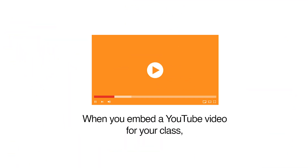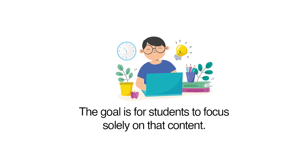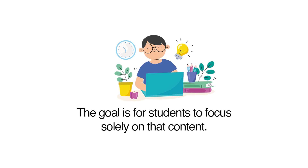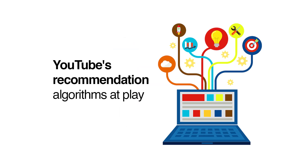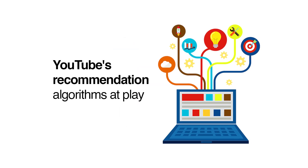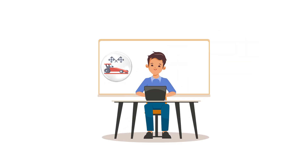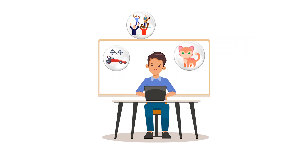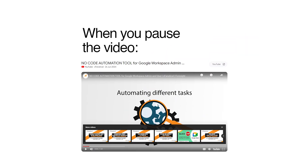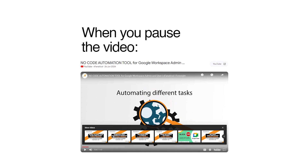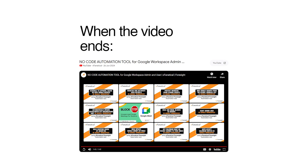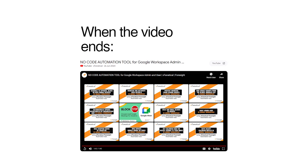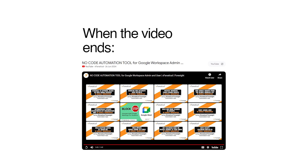When you embed a YouTube video for your class, the goal is for students to focus solely on that content. But with YouTube's recommendation algorithms at play, it's all too easy for students to wander off to irrelevant videos. Ever notice that when you pause a video, an overlay of suggested clips pops up, and once the video ends, a whole wall of related content appears?